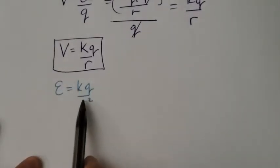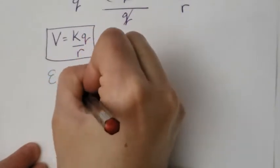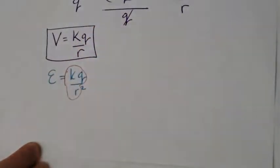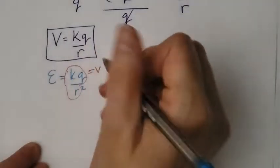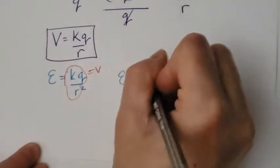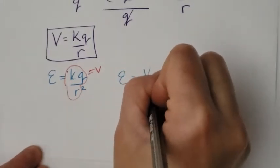We can just play with this formula a little bit. If I just take the KQ over R, that's equal to V. So what I'm going to do is just take this part, leave one of the R's behind, and replace that with a V. That's actually equal to a V. So electric field can also be written as V over R.